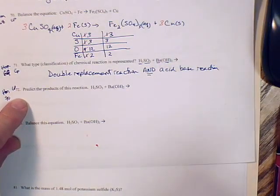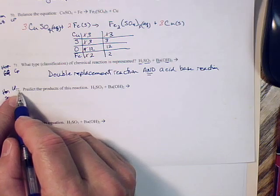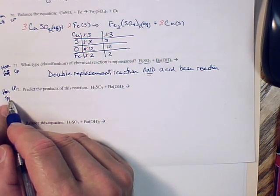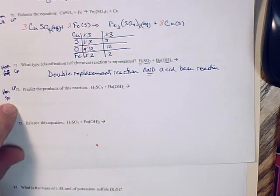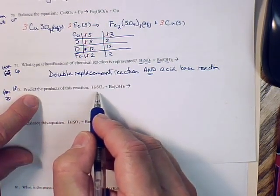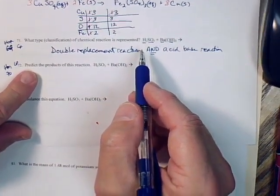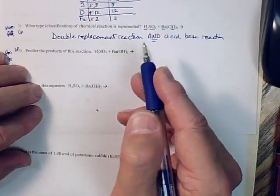All right, problem number 72 on the CP practice final exam and problem number 70 on the honors final practice exam ask you to predict the products of this reaction. These are the same reactants as we had in the previous problem number 71, but now we're going to predict the products.